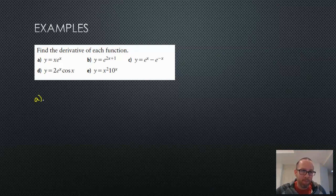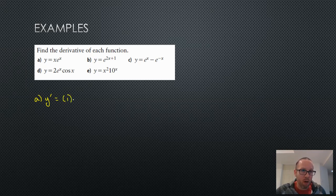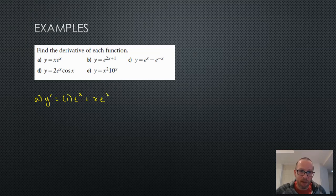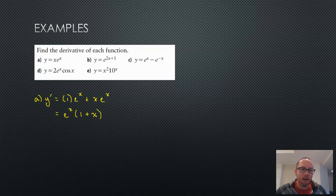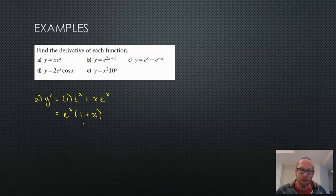For part A, we're using the product rule. Differentiate the first one, leave the second, plus leave the first x, and the derivative of e to the power of x is e to the power of x. You can actually factor out e to the power of x and be left with 1 plus x. That's useful because if I was setting that equal to 0, I'd see an easy solution would be negative 1.